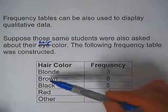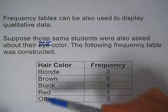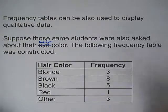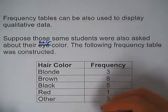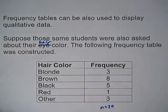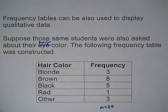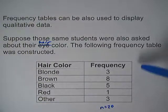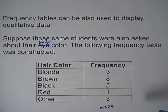So three people had blonde hair, eight people had brown hair, five had black, one red, three other. And these frequencies should also add up to 20. So frequency tables can be used for both qualitative and quantitative data. And if we wanted to, we could also make this into a relative frequency table. So that is the tutorial on frequency tables. Thanks for watching.